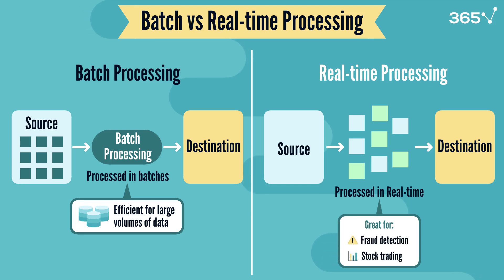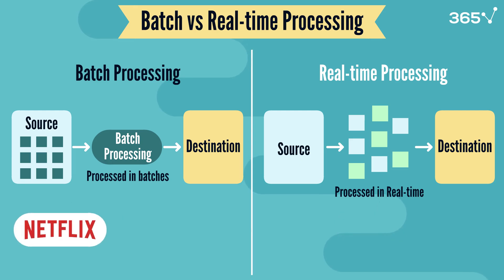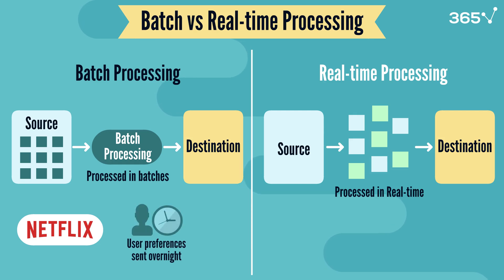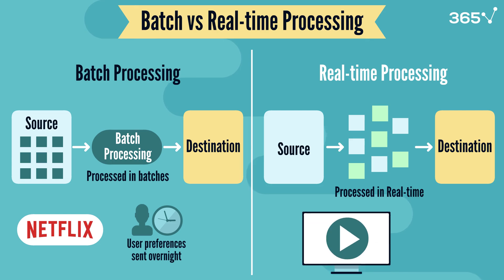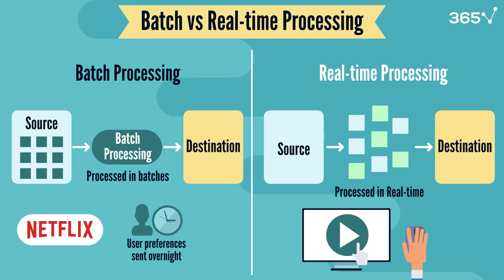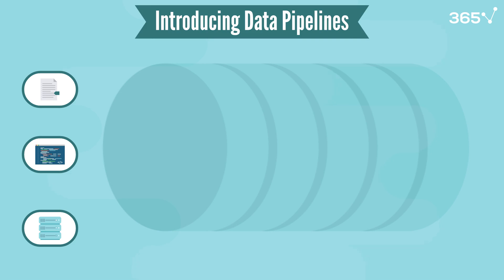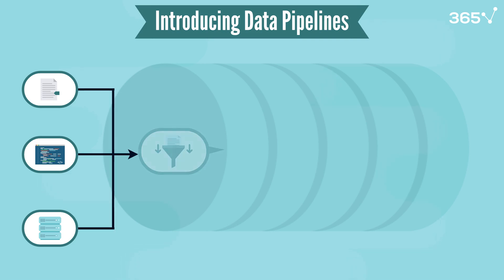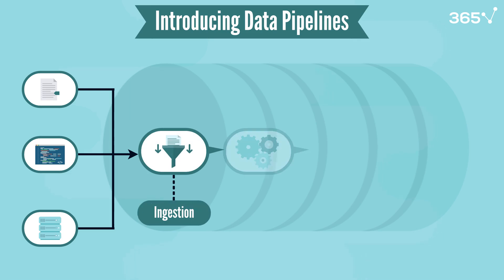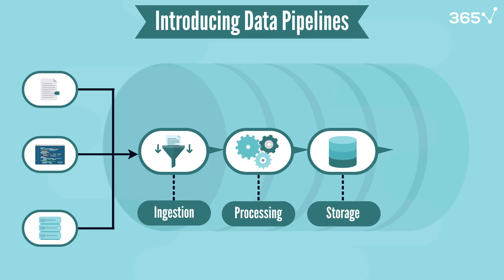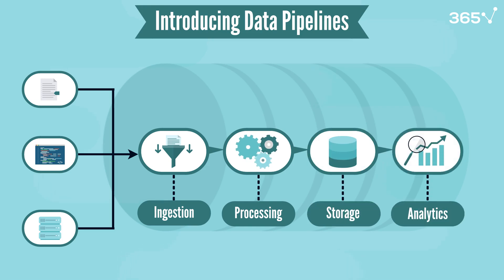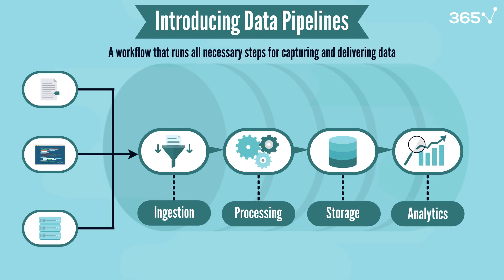A simple example to understand these two data flows would be a streaming service like Netflix, which uses batch processing to analyze user preferences overnight, while it runs real-time workflows to deliver content as soon as a user clicks the play button. To run these processes, whether in batches or in real-time, you need a data flow that runs several steps — from gathering data, cleaning it, processing it, and then delivering it to the required target system. This workflow that automatically runs all the necessary steps for capturing and delivering data is called a data pipeline.